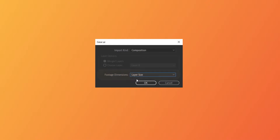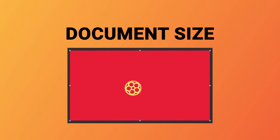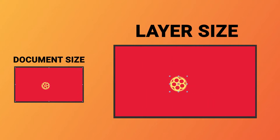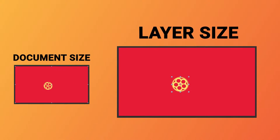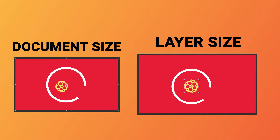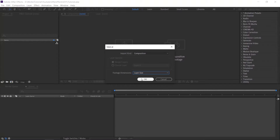Now footage dimension — why layer size? If you select document size, then the image will be imported as the artboard size of the Illustrator file. If you select layer size, then the layer will import as the particular object size. You can see the difference, and the layer size option will help you to place the anchor point in the center, so you can easily animate that. Hope this helps you understand. Click OK.